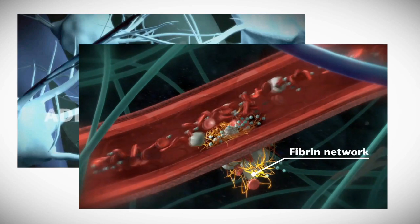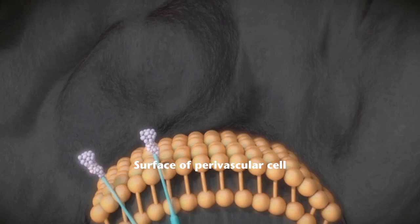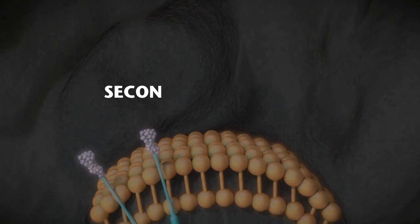To visualize this process of biochemical reactions between clotting factors in plasma, we need to zoom in even more. This will bring us to the surface of a perivascular cell on which we find tissue factors. The tissue factor initiates secondary hemostasis.